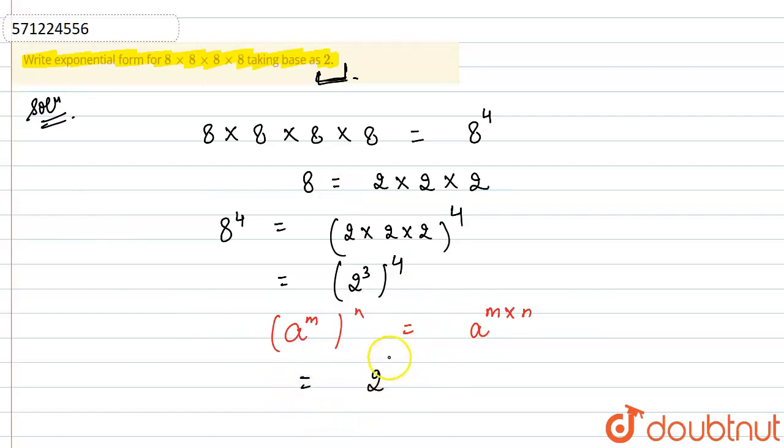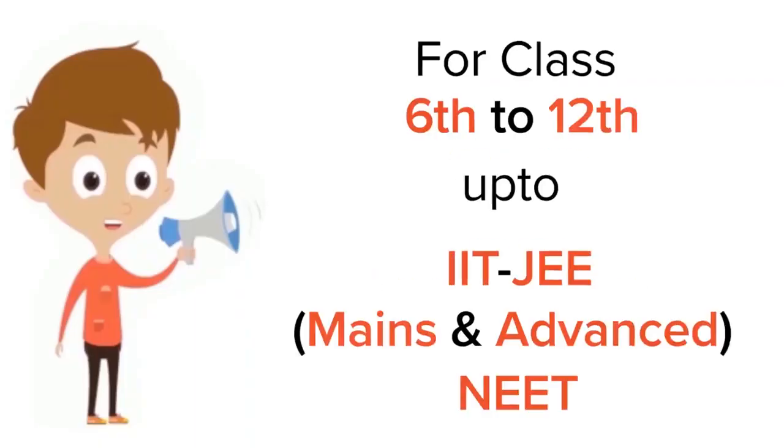The property that a raised to the power m—into four, and four times three is twelve. So the answer will be two raised to the power twelve. Okay, so this is how we have written the exponential form of eight into eight into eight into eight, taking the base as two. Thanks for watching.